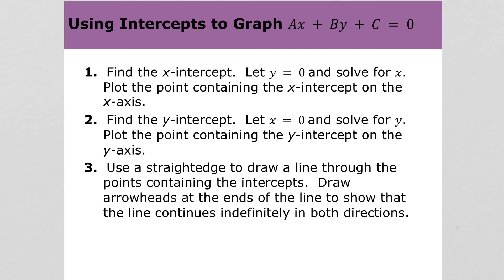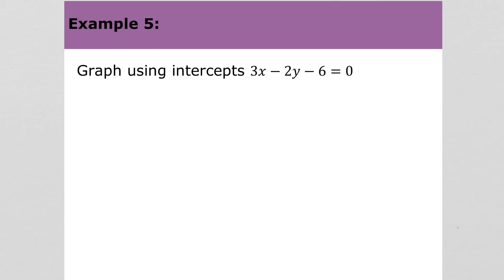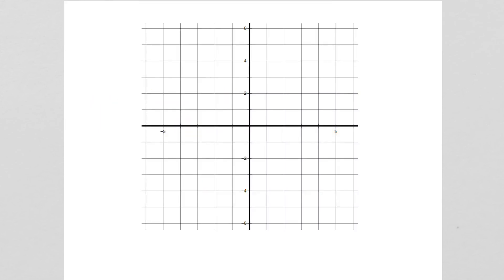The last topic we're going to look at in this section is using intercepts to graph an equation. So if we want to use intercepts to graph this line, then we need to find the x-intercept and the y-intercept. Remember to find the x-intercept, we let y be 0. So we'll have 3x minus 2 times 0 minus 6 equals 0. 2 times 0 is just 0, so we've got 3x minus 6. Add 6 to both sides and divide by 3. X is 2. So the x-intercept is the point (2, 0). So we can graph that right here.